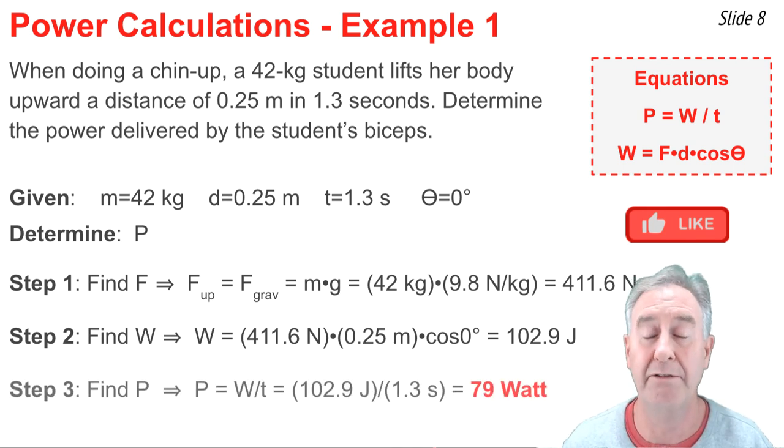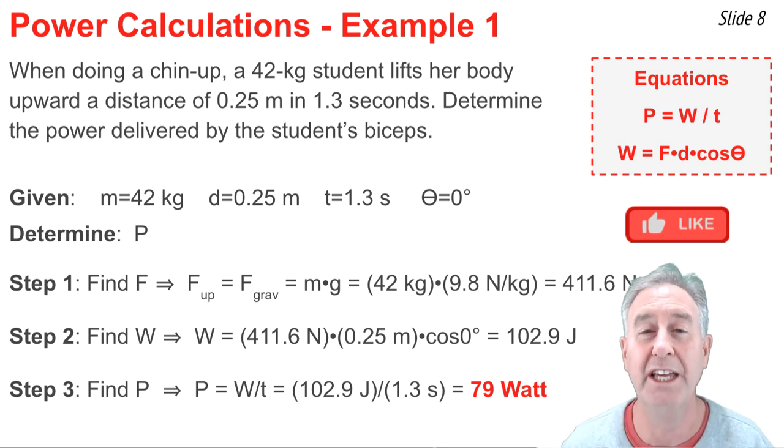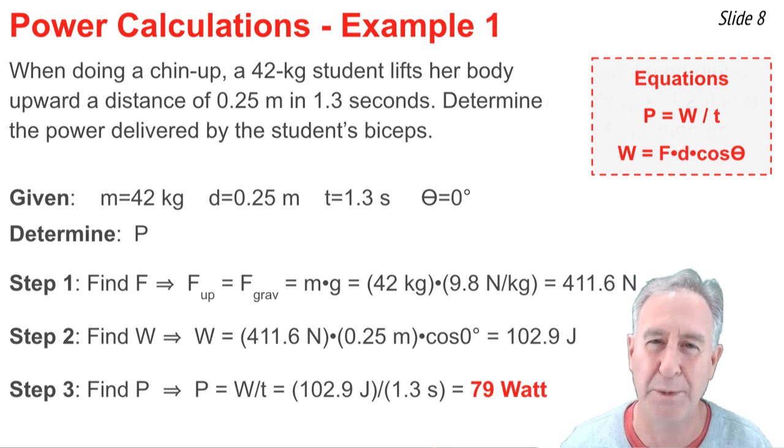Now, I'm going to calculate the power by dividing the work by the time. That would be 102.9 divided by 1.3 seconds, and I get approximately 79 watts.